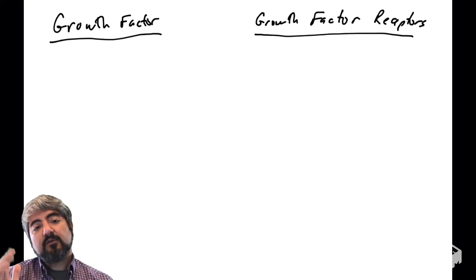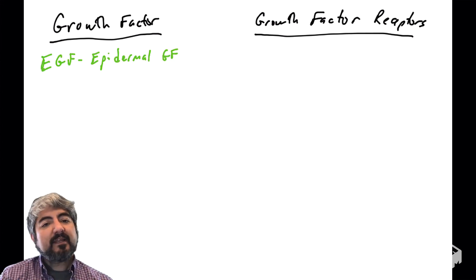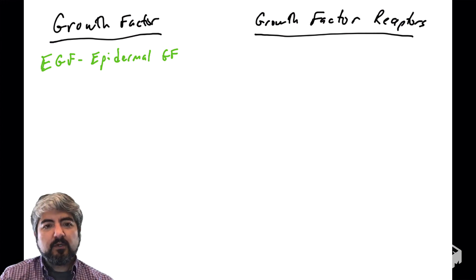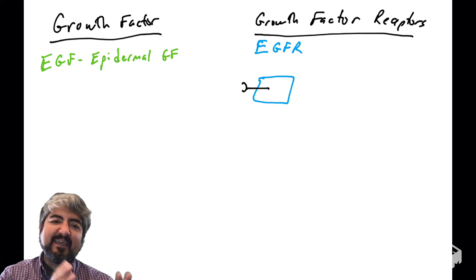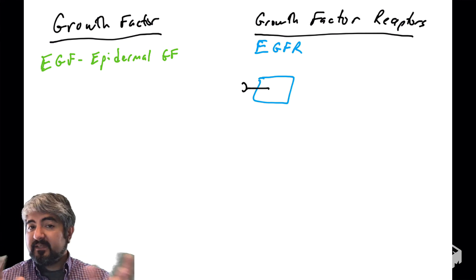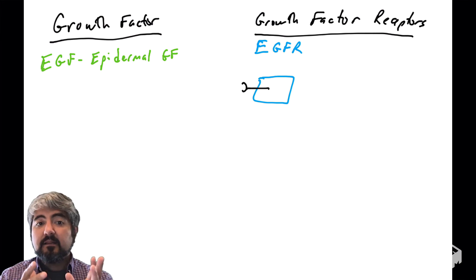Let's learn another set of growth factors and growth factor receptors. Another growth factor talked about a lot in cancer biology is EGF — the epidermal growth factor. EGF binds the EGF receptor. Again, we have cells that make the growth factor and cells that have the receptor. It could be different cells in local signaling — that'd be paracrine — or it could be the same cell, which would be autocrine.